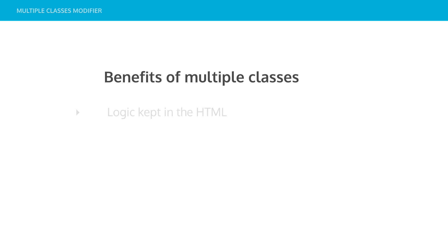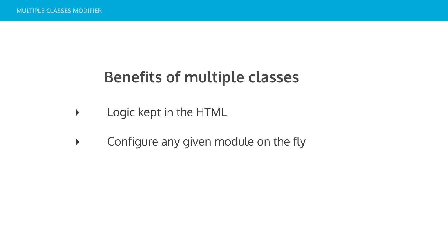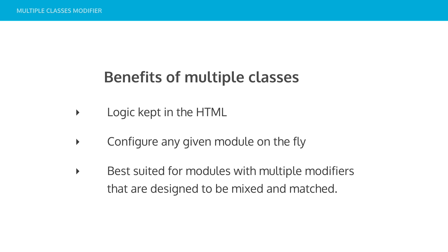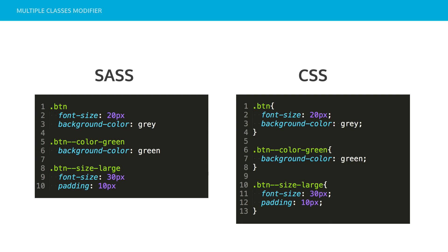The benefits of having multiple classes: all the logic is in the HTML, sort of like inline styles — you can build something as you need it without having to write any CSS. You can configure any given module on the fly, change the color of a button, change the size of some text. It's best suited for modules with multiple modifiers that are designed to mix and match — perfect for UI libraries. The CSS for this is identical except for some curly braces and semicolons. Specificity issues are lessened if you look after what you're doing, but ordering can still become a problem because you might have font-color in one rule and font-size in another and whatever comes last will take effect.